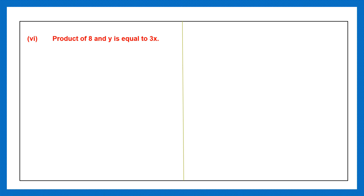Question 6: the product. Product also means multiplication. Product of 8 and y is equal to 3x. So the product of 8 and y means 8 into y is equal to 3x. We can also write this as 8y is equal to 3x.